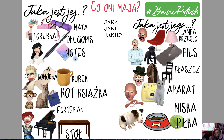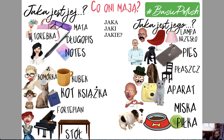Now we've got a gold mobile phone and an orange mug. Jaka jest jej komórka? Jej komórka jest złota. Jaki jest jej kubek? Jej kubek jest pomarańczowy. Once again: Jaka jest jej komórka? Jej komórka jest złota. Jaki jest jej kubek? Jej kubek jest pomarańczowy.